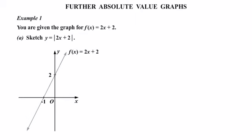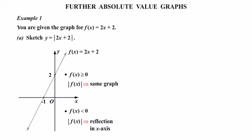To draw a quick sketch of this there are a couple of conditions that will really help. First of all, when f(x) is greater than or equal to 0, the absolute value of f(x) will be exactly the same graph. And where f(x) is less than 0, the absolute value of f(x) will be a reflection in the x-axis.